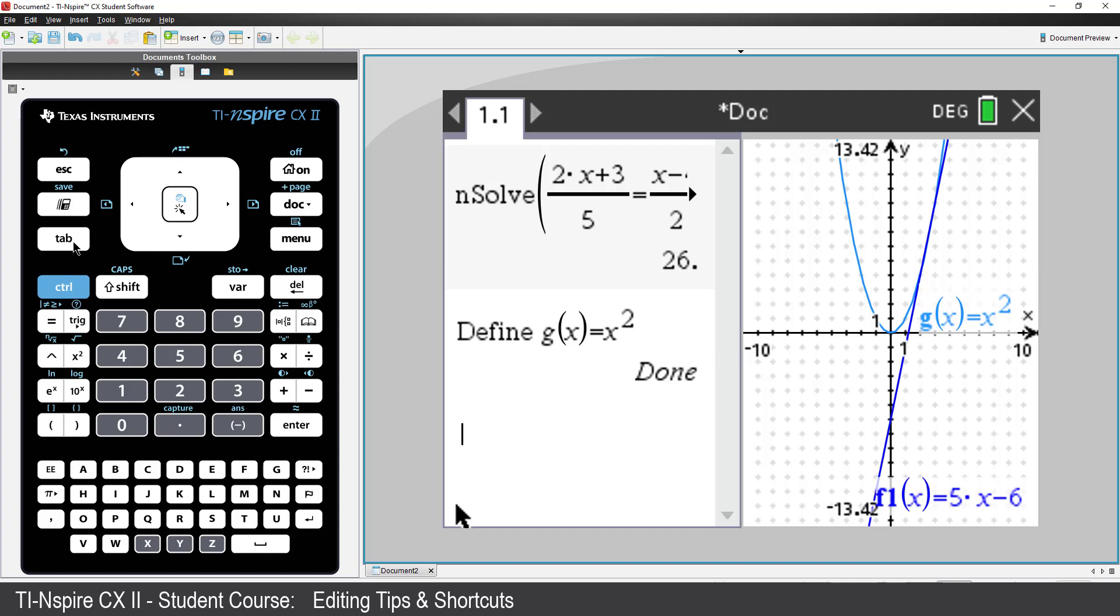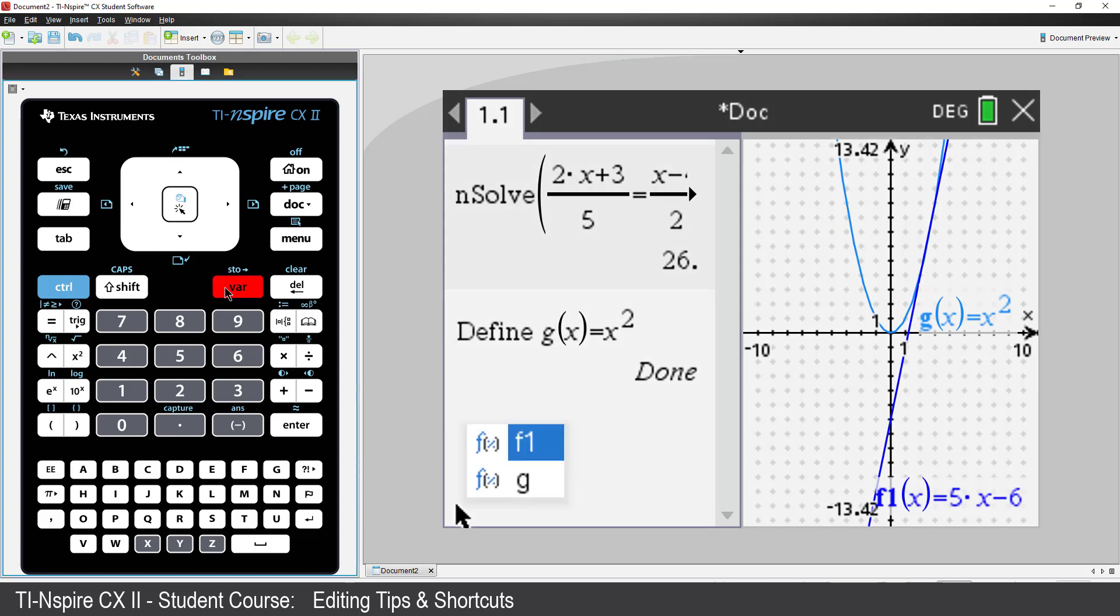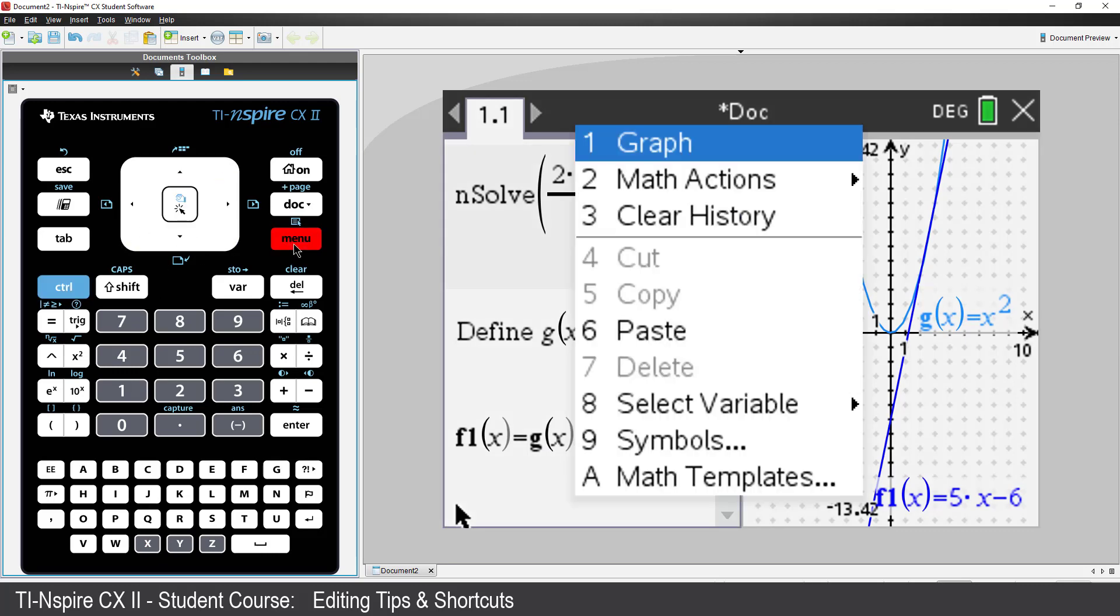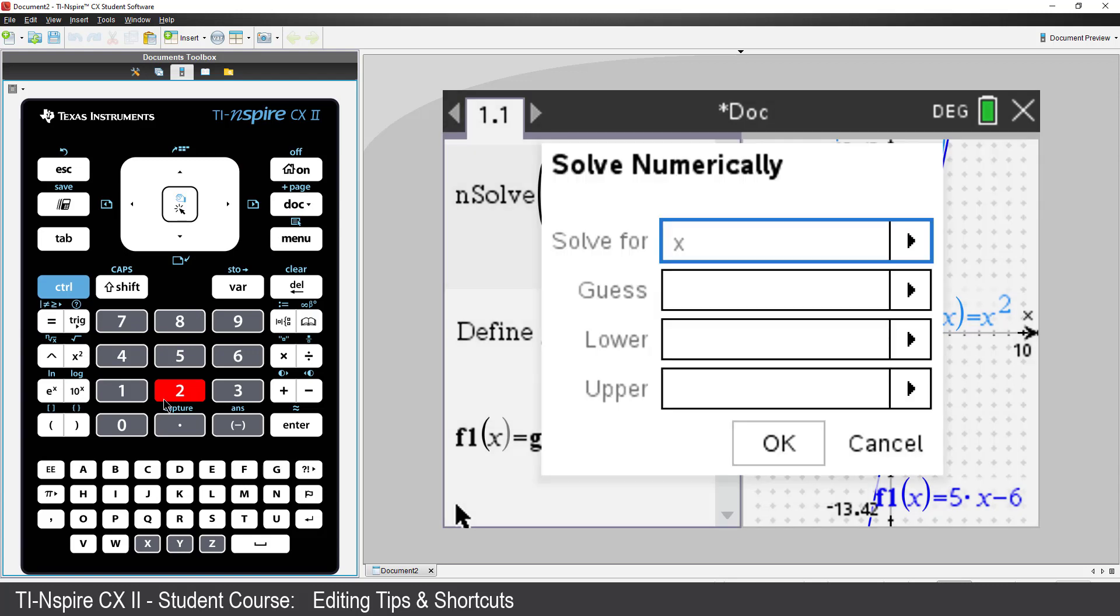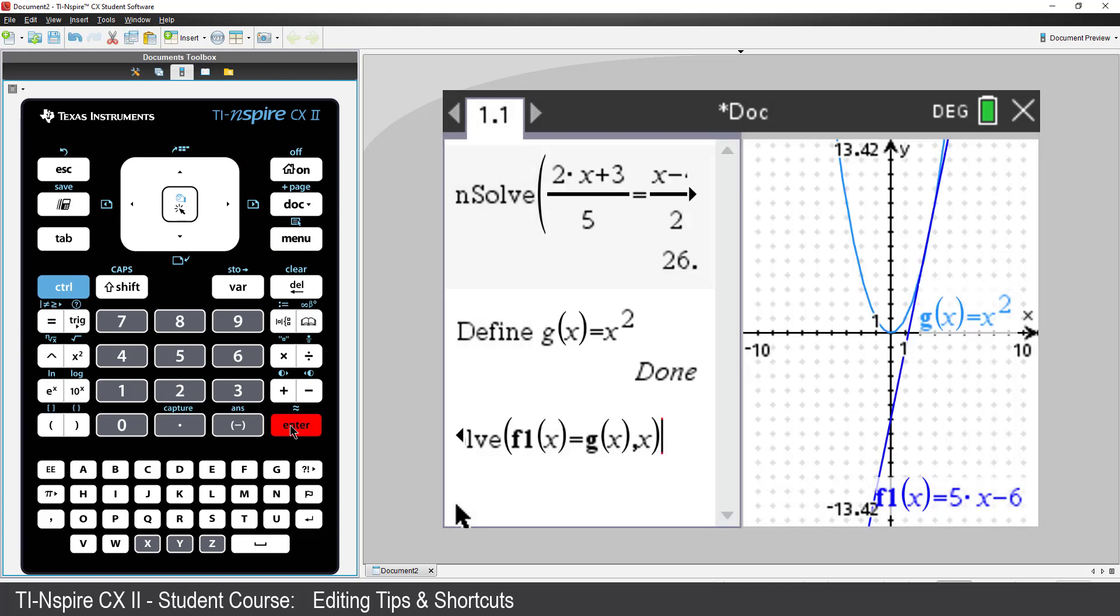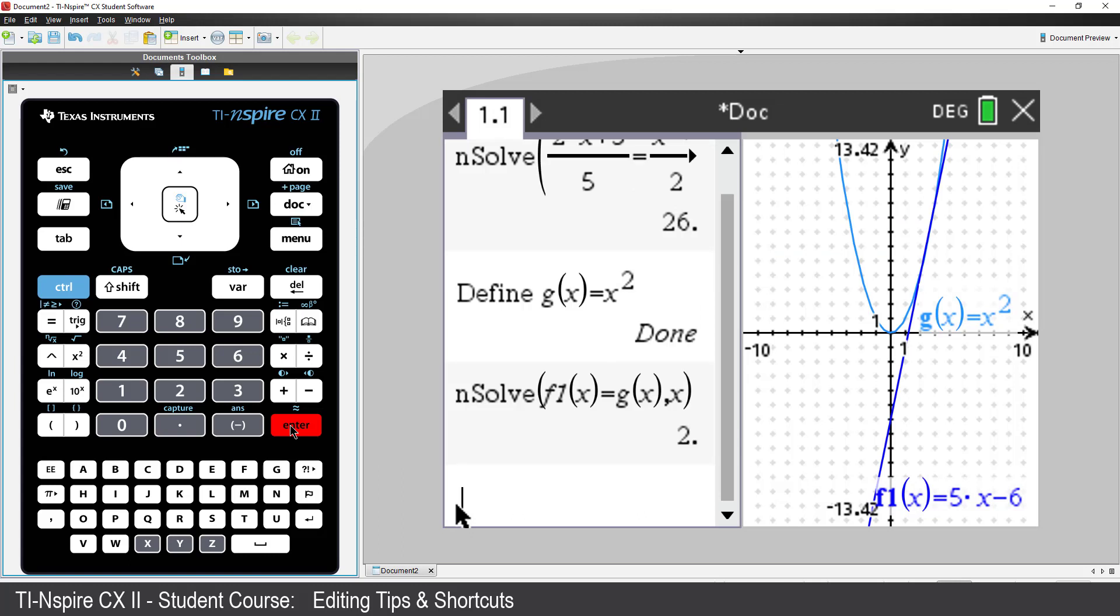If the graphs intersect, that means F of X equals G of X. I can recall these using the Variable menu. Then right-click, select Math Actions, and then select Solve Numerically. So the graphs intersect when X equals 2, but the graphs appear to have two points of intersection.